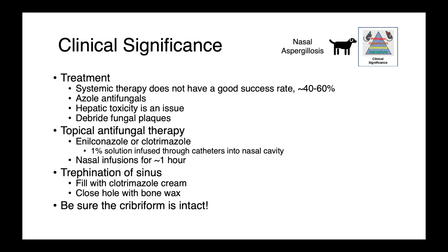The first step is to debride the fungal plaques and remove as much of that grossly infected tissue as possible. Topical antifungal therapy is really critical. Either enilconazole or clotrimazole infusions can be done — a 1% solution can be infused through catheters into the nasal cavity, where it's left to sit for up to an hour.